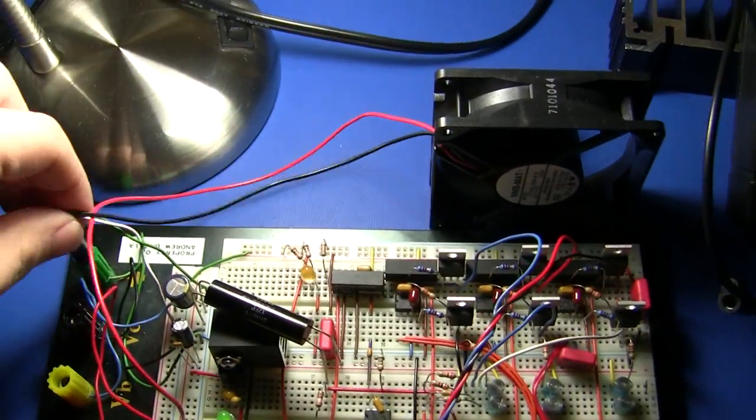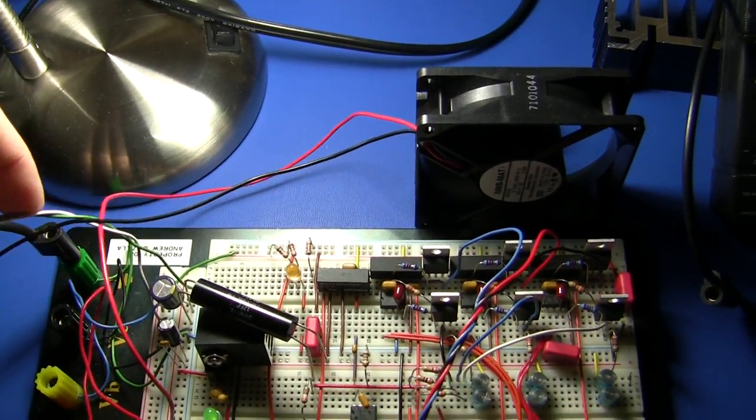So I just have everything running off of Variac that's connected to the power transformer, diodes, capacitors. And that is basically variable anywhere between about 0 and 40 volts.